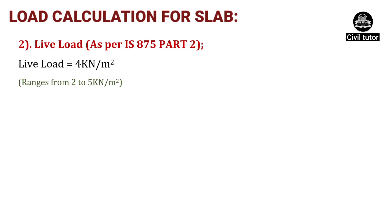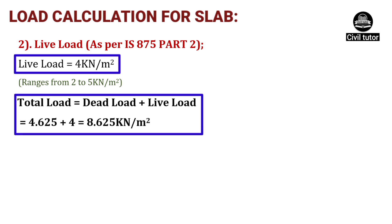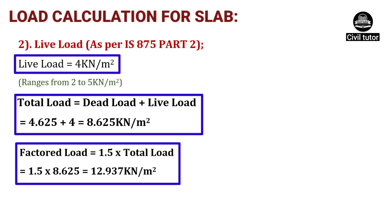The live load is calculated as per IS 875 Part 2 and is assumed as 4 kN/m². The total load of the slab equals dead load plus live load: 4.625 + 4 = 8.625 kN/m². For designing the slab, we multiply the total load by the factor of safety of 1.5, giving a factored load of 1.5 × 8.625 = 12.937 kN/m².